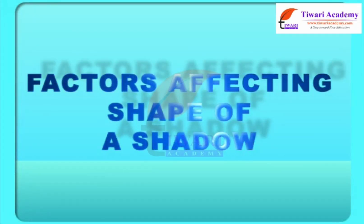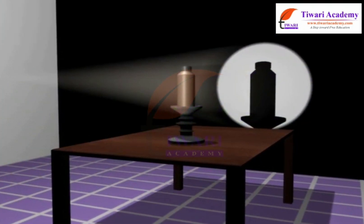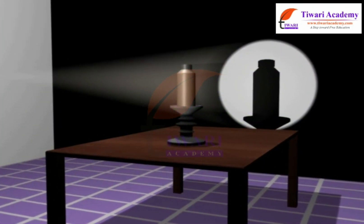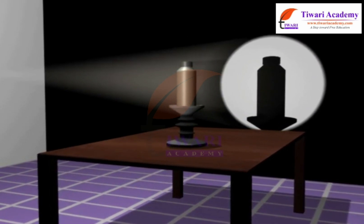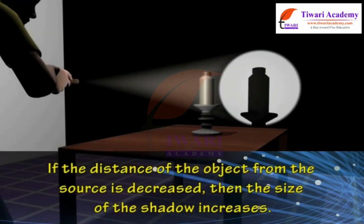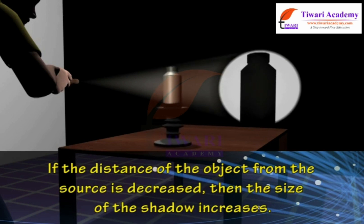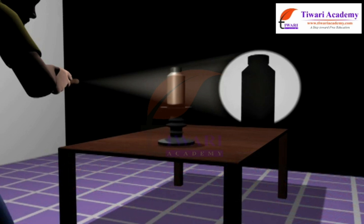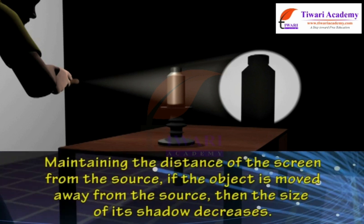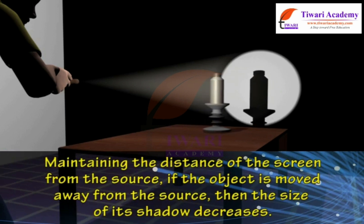Factors affecting the shape of a shadow. The shape of the shadow of an object depends neither on the color of the object nor on the color of the screen. If the distance of the object from the source is decreased, then the size of the shadow increases, provided the distance between the source and the screen is constant. If the object is moved away from the source, then the size of its shadow decreases.